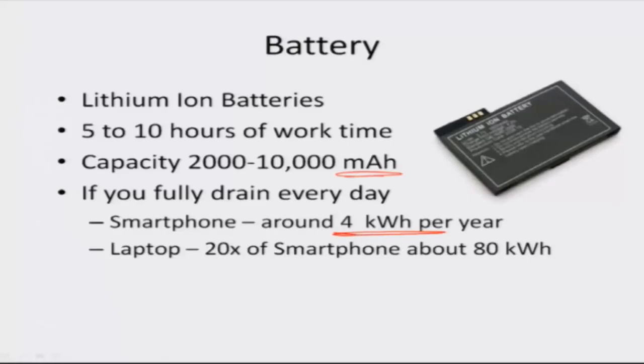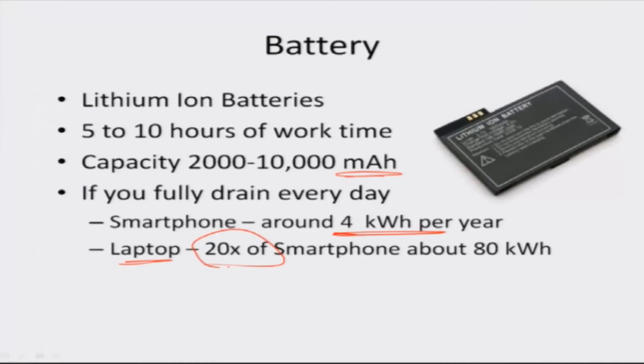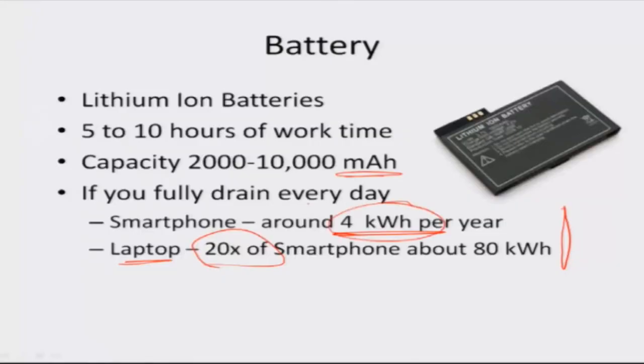A phone is consuming energy — you charge it every day or once every three days. How much does it consume? Is it like an electric lamp or like a refrigerator? Typically a smartphone is in the range of 2 to 4 kilowatt hours per year. A kilowatt hour is one unit — if you take a 100-watt lamp and run it for 10 hours, you consume one unit. That is the amount of energy a smartphone consumes in one full year. A laptop, for comparison, consumes about 20 times more. This assumes you charge it fully once every day and discharge it fully by evening, giving an estimate of about 3 to 4 units of energy per year.